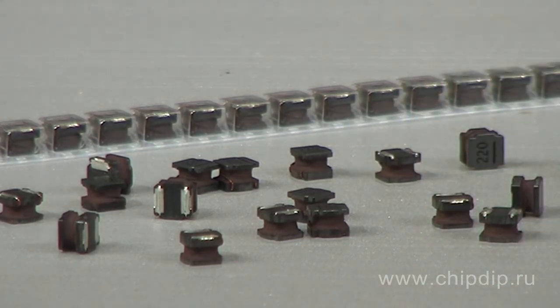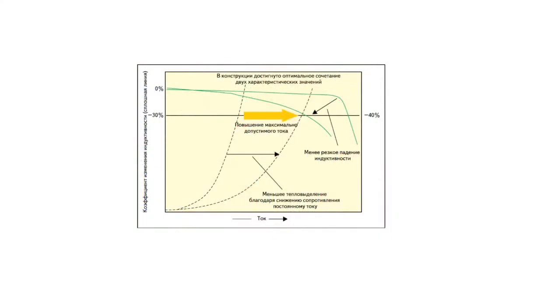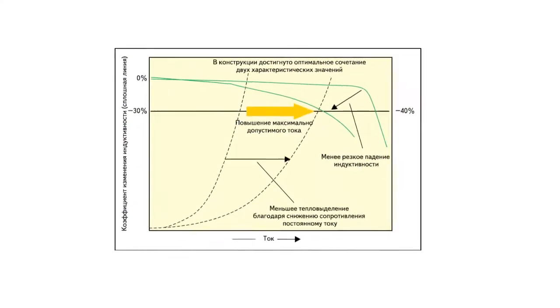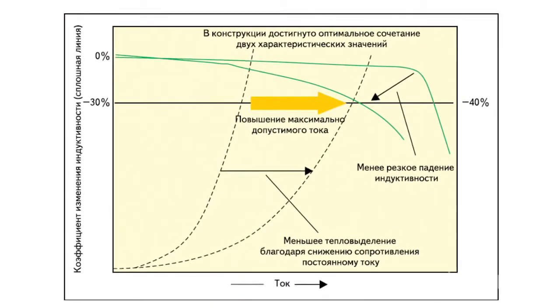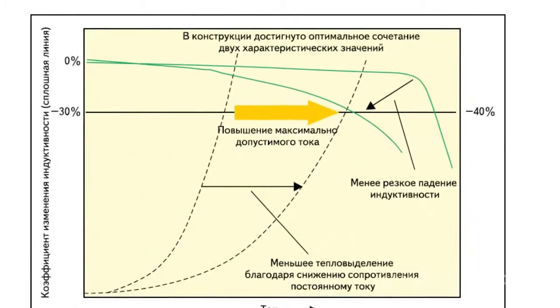The maximum possible current of the wire inductor is determined by the parameters of the constant magnetization current. The latter, in turn, depends on the current inductance parameter, which varies with temperature depending on the heat emission due to active losses in the winding.